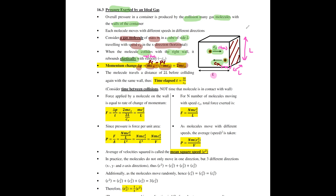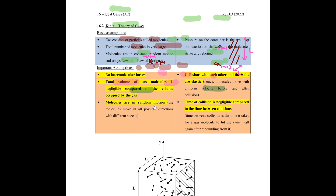That is your momentum change. After that, the molecule will travel a distance of 2L before colliding again with the same wall. You are trying to find the time elapsed T — specifically the time between collisions, not the time the molecule is in contact with the wall. The time of collision is assumed negligible.